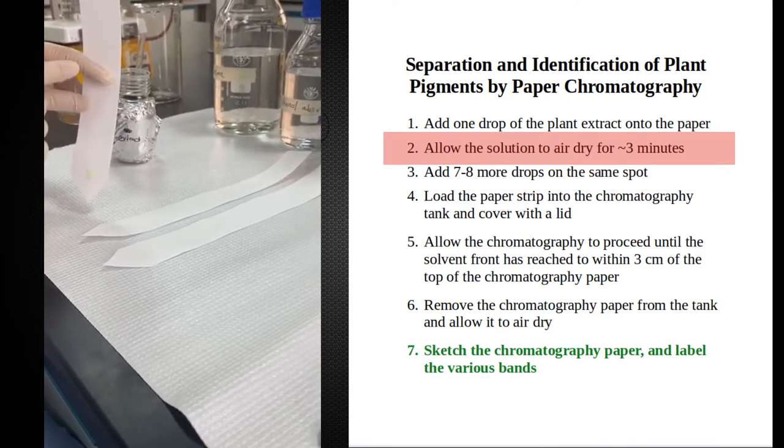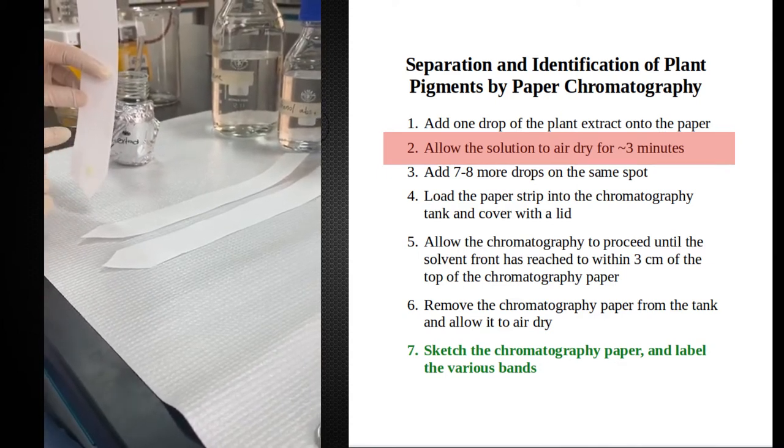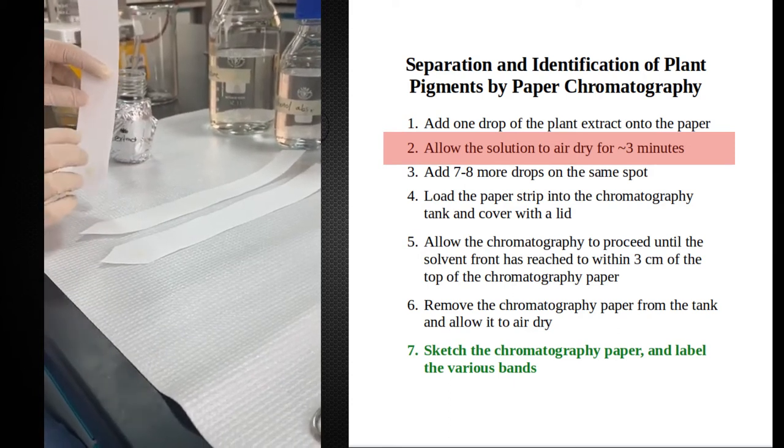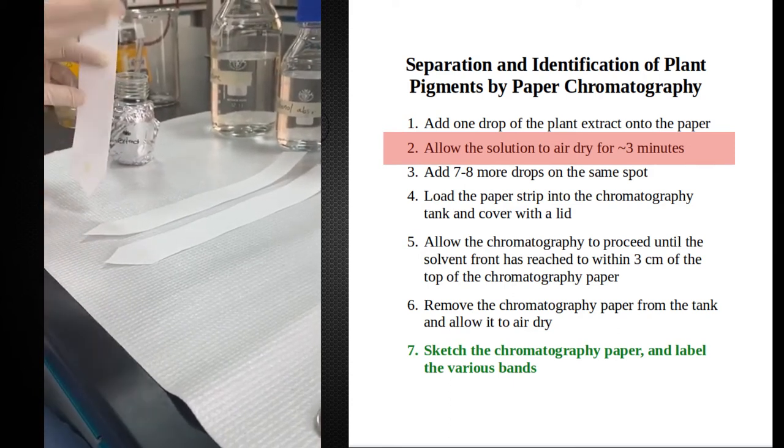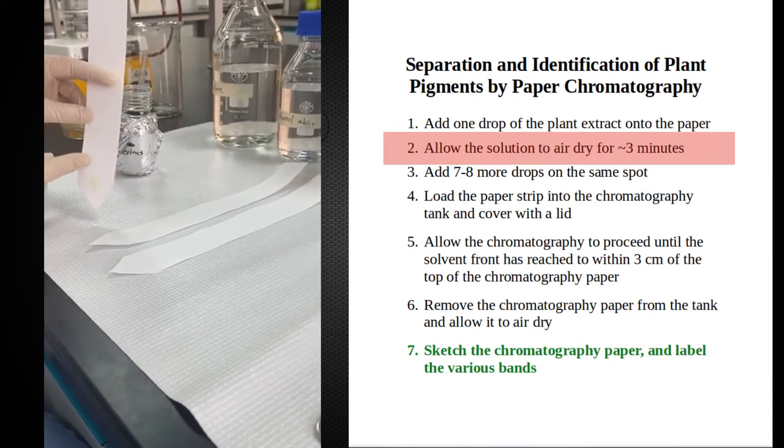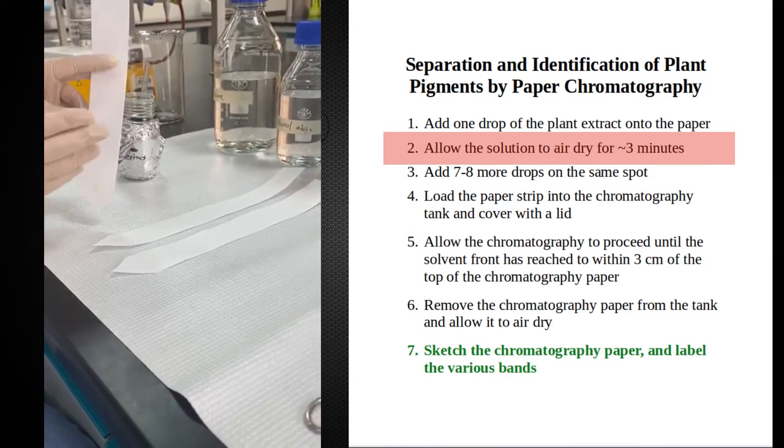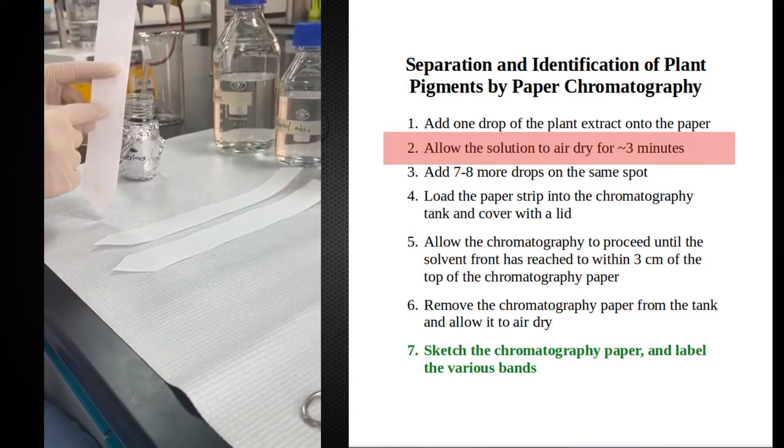The different components of the chlorophyll extract are going to go up and stick to the paper at different points according to their polarity. The most polar ones will not dissolve in the solvent, so they will stick to the paper down there. The most non-polar components will go up with the solvent.